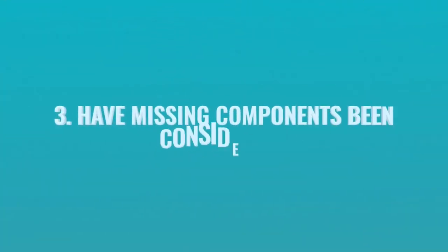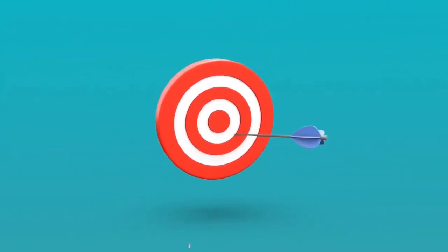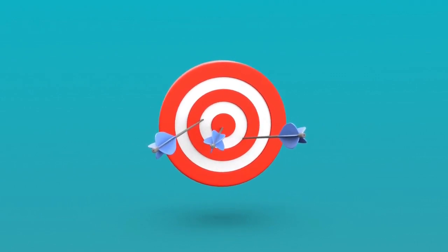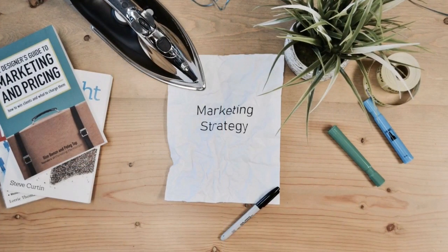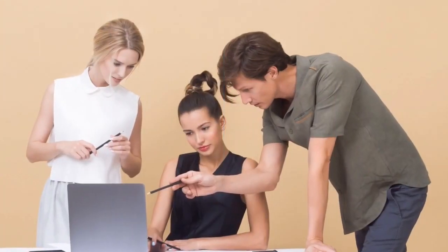Thirdly, have missing components been considered? The principal aim of the argument is to persuade the target audience that a conclusion is true or probably true. Most of the time, only the pros of the product, the candidate, or the idea are presented — so this is only a half truth. The critical question here is: what is left out, what is missing? Are there any counter-arguments? Being an advocate for the other side is the only way to find out if the missing information is important and may change your decision.